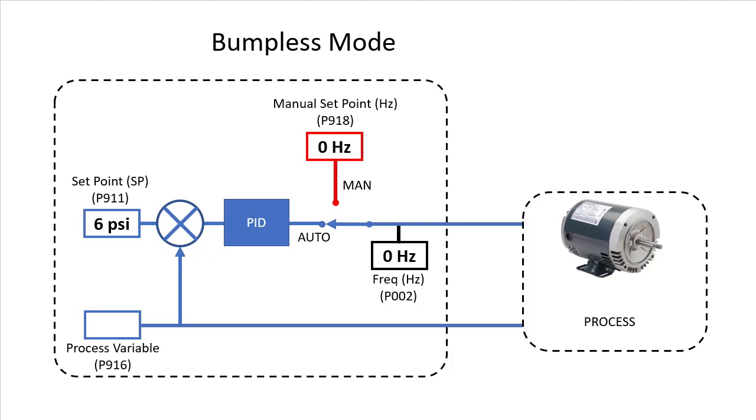PID is going to try to get the process to 6 psi as fast as it can, which usually means it will send the motor straight to its max speed until the pressure gets close to its desired value and then back off on the motor speed so the process settles out right at the set point.